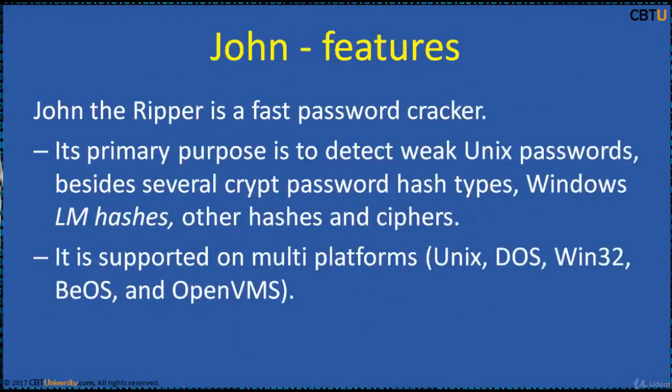John features include being a fast password cracker. Its primary purpose is to detect weak Unix passwords. Besides several crypt password hash types, it also supports Windows LM Hashes, other hashes, and ciphers. It is supported on multiple platforms: Unix, DOS, Win32, BeOS, and OpenVMS.